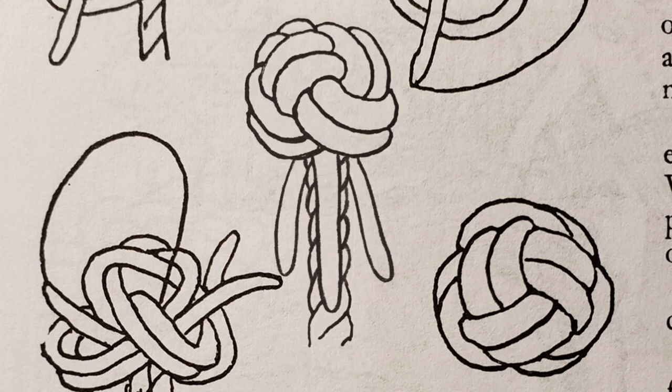Last, we have the manrope knot, a name we still see today. Before it was tied, each strand was covered with canvas, then tied and tucked and cut flush at the base.